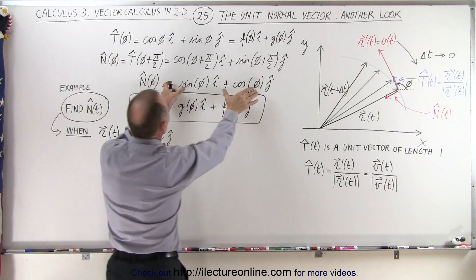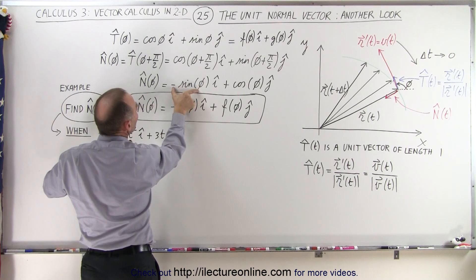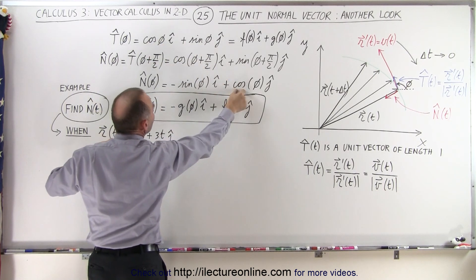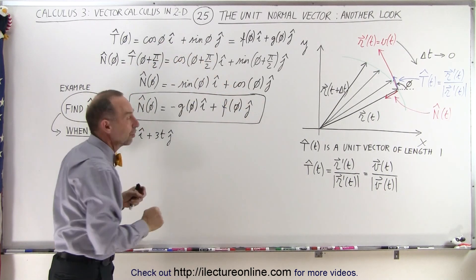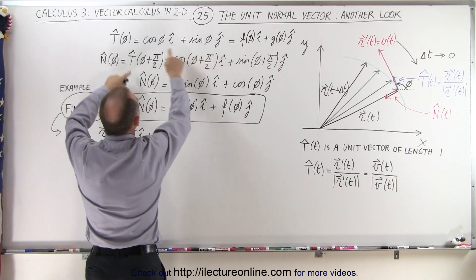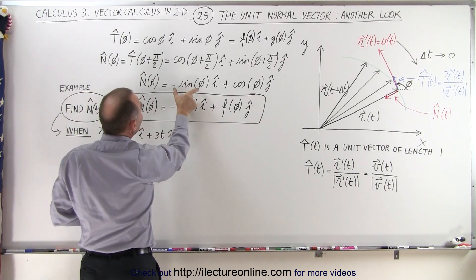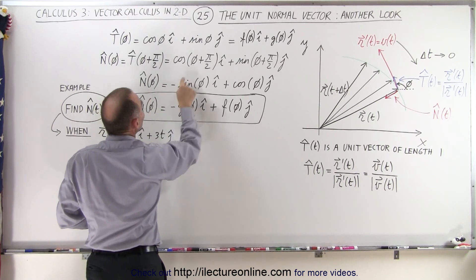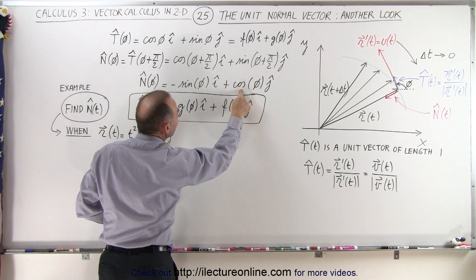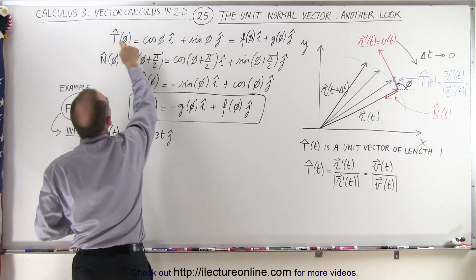Comparing this to the unit tangent vector, notice that the x-component of the normal vector is the negative of the y-component of the tangent vector, and the y-component of the normal vector equals the x-component of the tangent vector. In other words, the x-component of the unit normal vector is the same as the negative of the y-component of the unit tangent vector, and the y-component of the unit normal vector equals the x-component of the unit tangent vector.